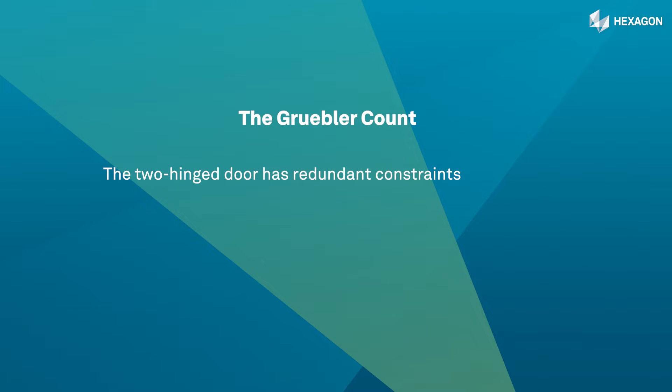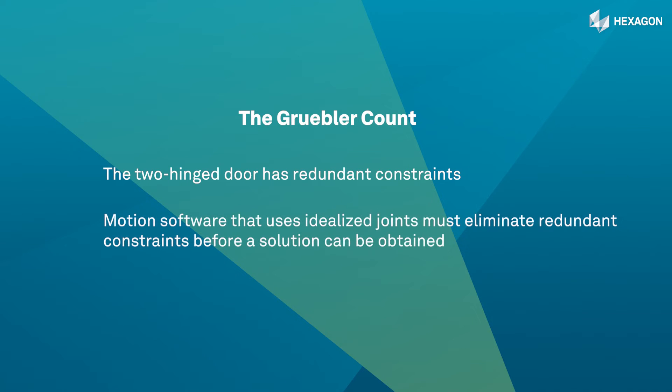From a pure motion perspective they are not needed. In fact, motion software that uses idealized joints like the revolute joint that corresponds to a door hinge, for example, must eliminate redundant constraints before a solution can be obtained. If you do not remove additional constraints, the software will typically do it for you, but you have no control over which constraints were removed to make the system non-redundant.